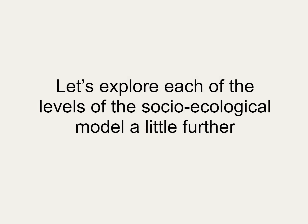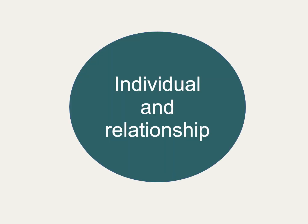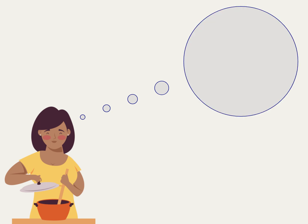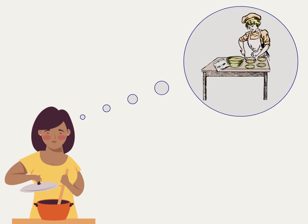Now that you've seen the model, we'll take a look at what each level means in a little more detail. At the individual and relationship level are the biological and personal history factors, such as adhering to rigid gender roles and identities. An example of this might be: my grandmother and mother stayed at home to cook three meals a day, so I must do the same.